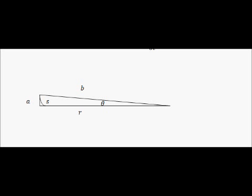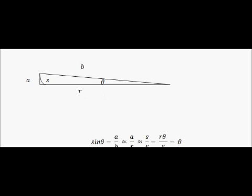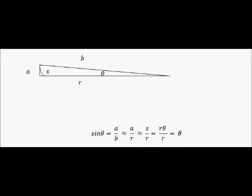Since delta t is close to zero, so is theta. I've drawn this triangle where we're going to assume that theta is very close to zero. The approximation we're going to use is for sine theta. We know that sine theta, from basic trigonometry, is equal to a over b. Since theta is very, very small, we can say that this is approximately equal to a over r, because r and b are pretty much the same when theta is nearly zero.